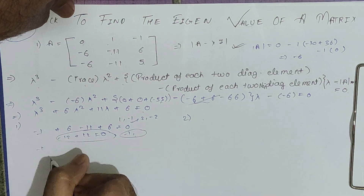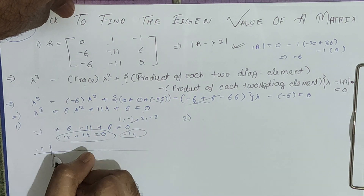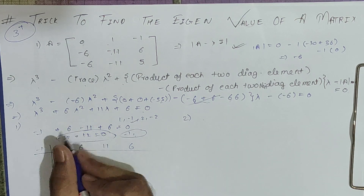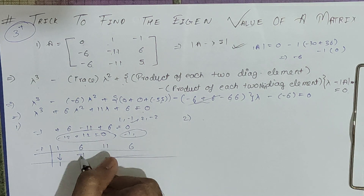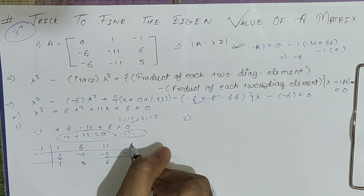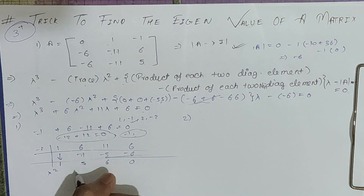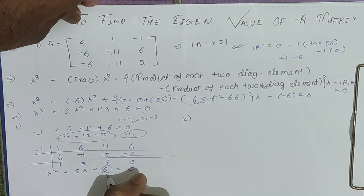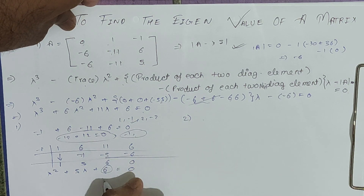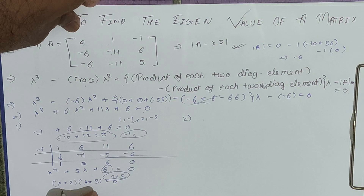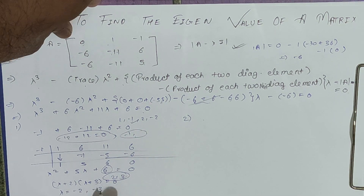Using minus 1, we apply synthetic division with coefficients 1, 6, 11, 6. The first element is copied directly; multiplying and adding gives 1, 5, 6, 0 — so the quadratic factor is lambda squared plus 5 lambda plus 6. We need two numbers whose product is 6 and sum is 5: that's 2 and 3. So (lambda plus 2)(lambda plus 3) equals zero, giving lambda equals minus 2 and minus 3. The complete eigenvalues are lambda equals minus 1, minus 2, and minus 3.